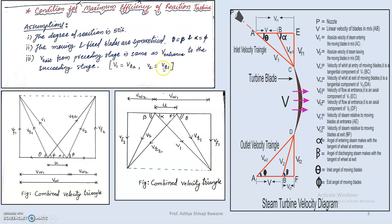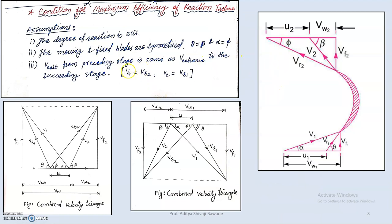This means v1 equals vr2 and v2 equals vr1. Looking at the inlet and outlet velocity triangles — we keep the same velocity triangle format for all cases, whether hydraulic or steam turbines. The inlet velocity v1 equals vr2, and vr1 equals v2. Also, alpha equals phi and theta equals beta.